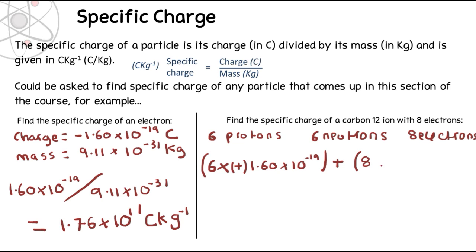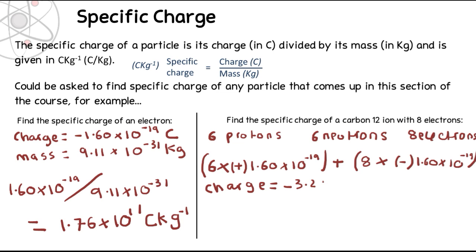For the electrons, it's 8 times negative 1.60 times 10 to the minus 19. Adding the proton and electron charges together gives us the overall charge of the ion, which works out as minus 3.20 times 10 to the minus 19 coulombs. You might have seen that just by looking at it — six of the proton charges cancel out six of the electron charges, so it's effectively the charge of two electrons.